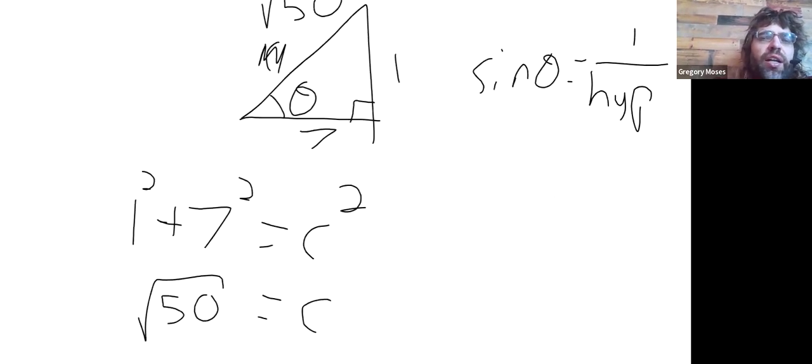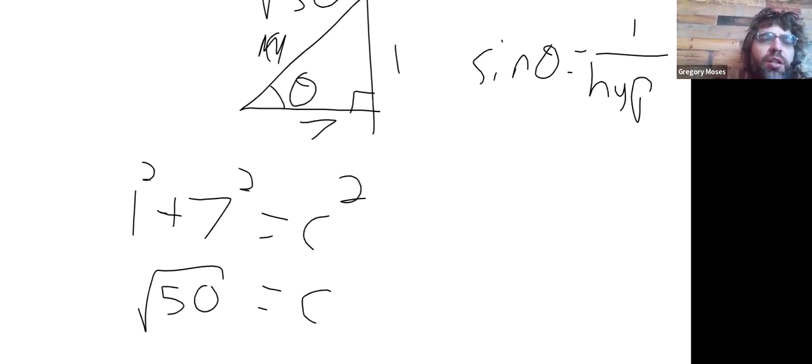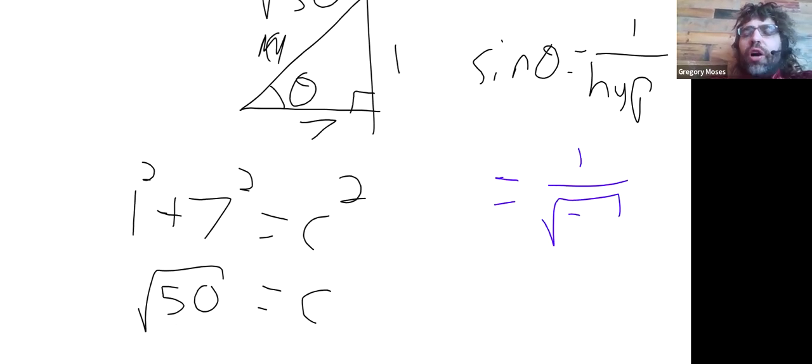Then the sine is one over the hypotenuse, which is one over the square root of 50. Problem solved. Or is it?